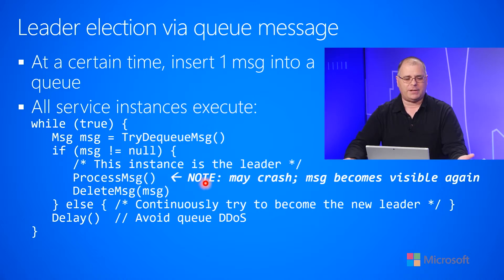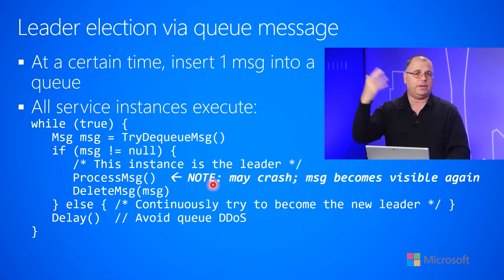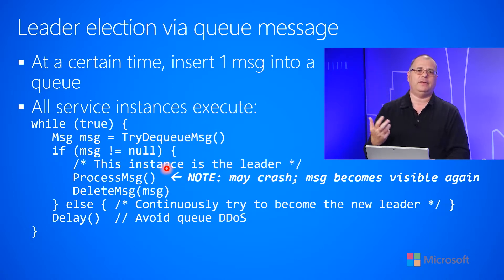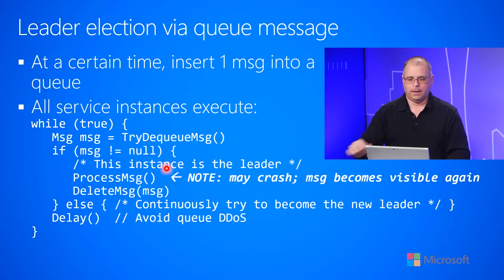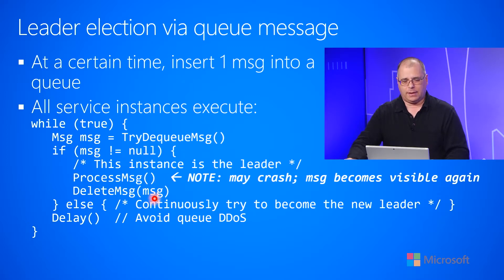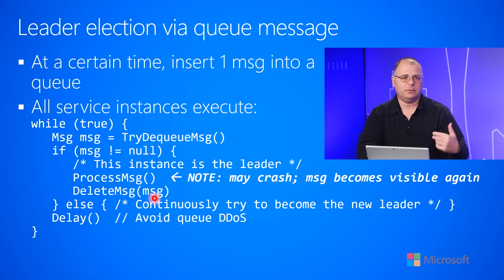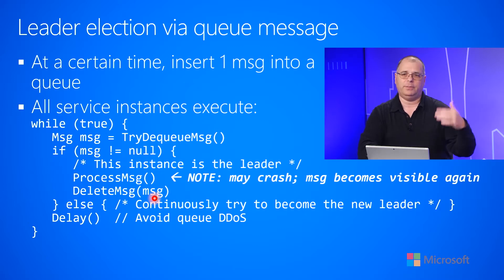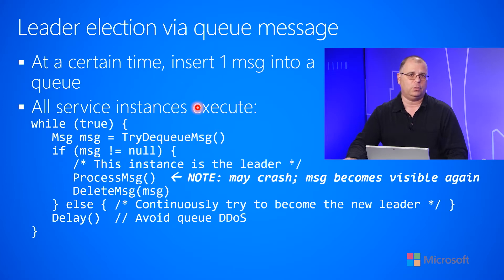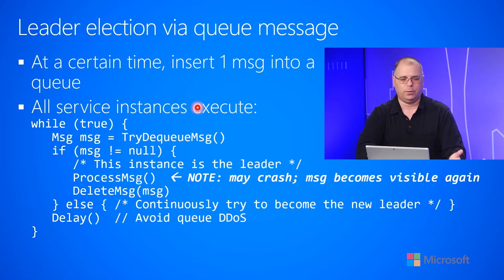Of course it may crash. If it crashes then the queue message will become visible again, and the other instances are looping around trying to grab the message. Another leader will be elected and it will go and produce that report. Eventually the report will get done in its entirety, and then we go back to the queue and delete the message. The message won't be delivered to any other service instance, and there's no need to pick another leader until maybe tomorrow or next week when this external force inserts a new message into the queue to have a billing report produced for the following week.